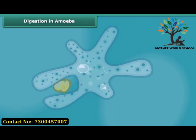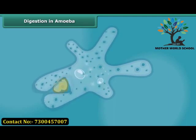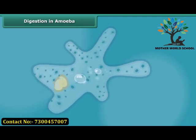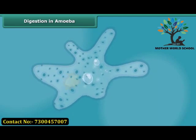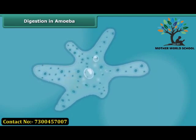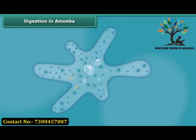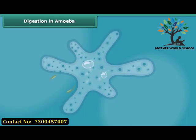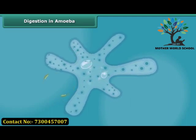The food becomes trapped in a food vacuole, and digestive juices act on the food to break it down into simpler substances. Finally, the undigested food is expelled outside by the vacuole. By this, you can say all animals have the same basic process of digestion.